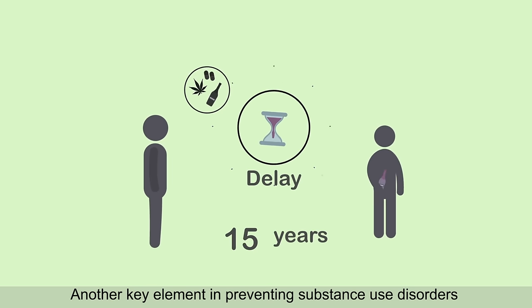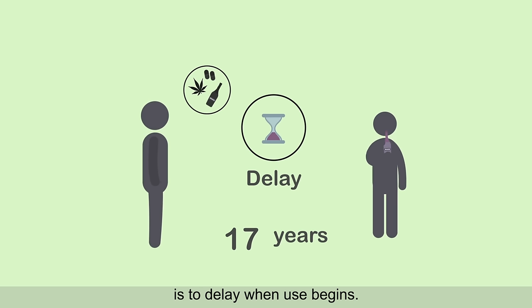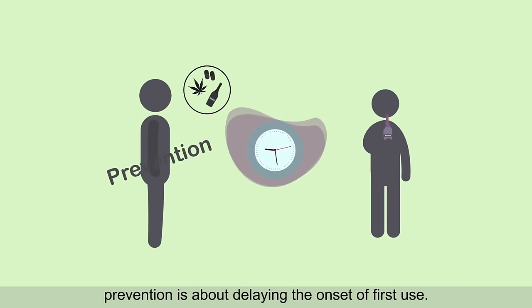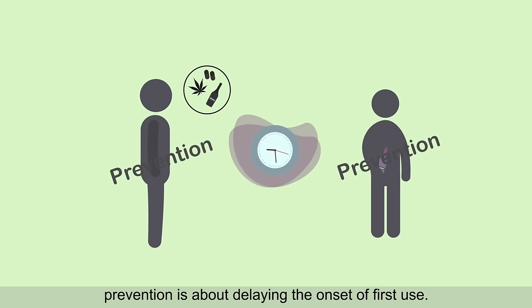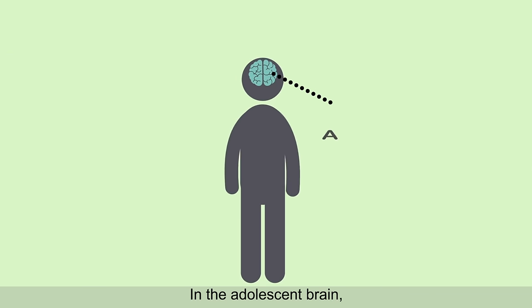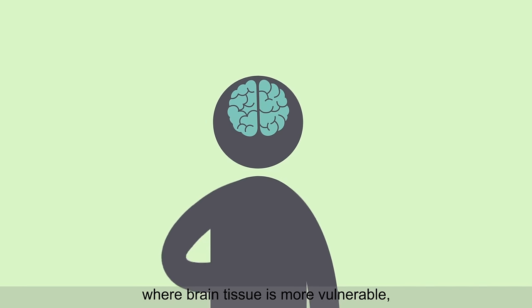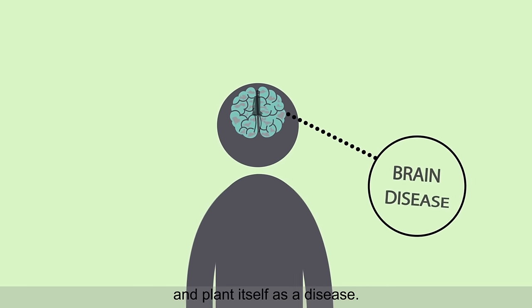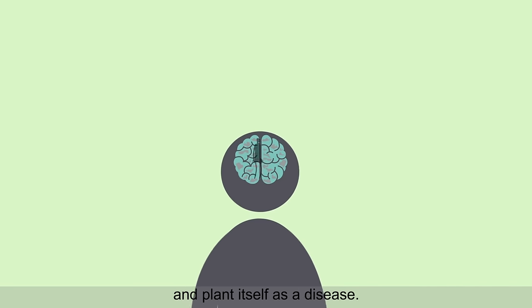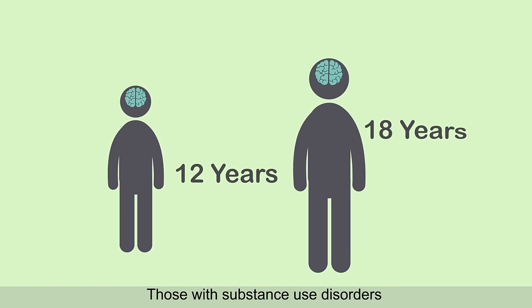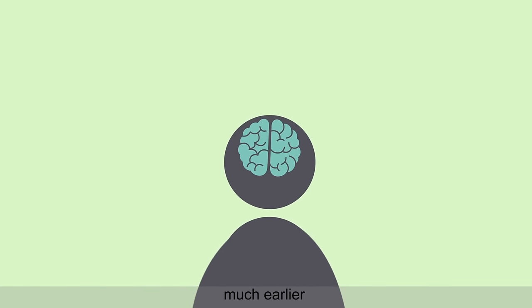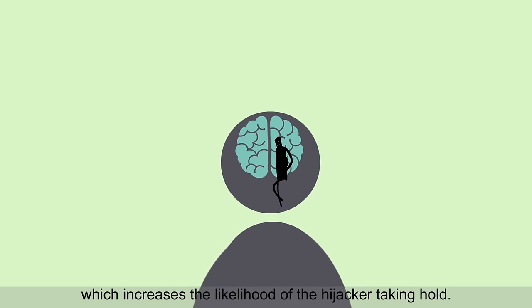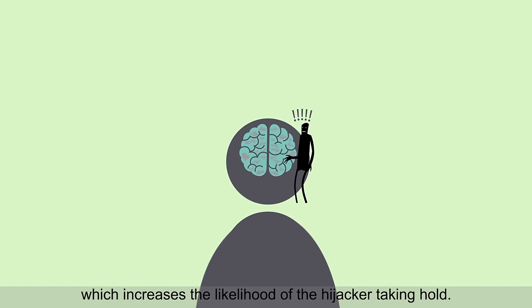Another key element in preventing substance use disorders is to delay when use begins. Put simply, prevention is about delaying the onset of first use. In the adolescent brain, where brain tissue is more vulnerable, the hijacker is more prone to weaken the brain and plant itself as a disease. Those with substance use disorders commonly initiate first use much earlier, between 12 and 18 years old, which increases the likelihood of the hijacker taking hold.